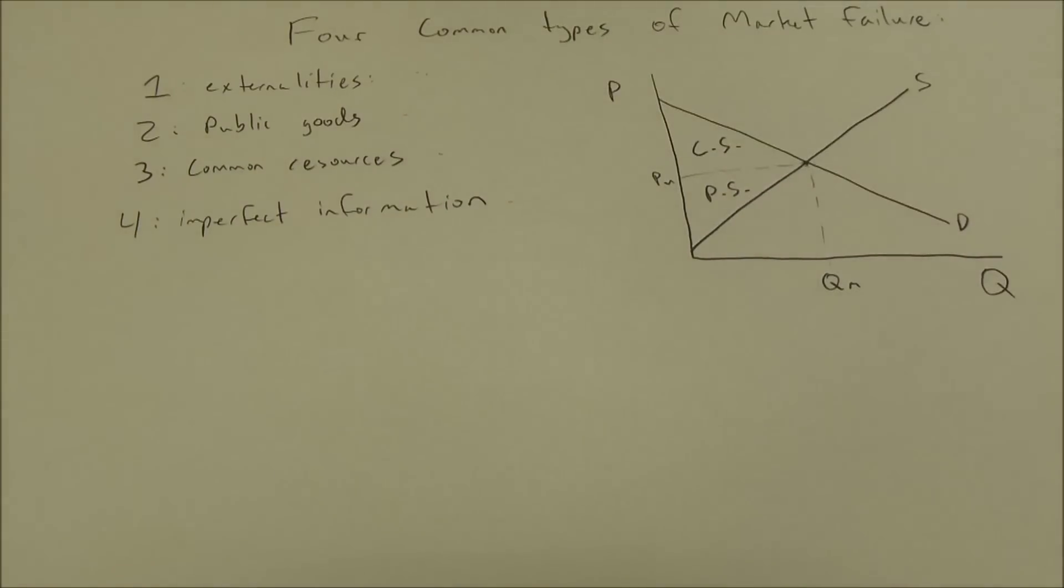So first, externalities. Externality means that there's a third party who's affected by a transaction that isn't involved in the transaction. So let's suppose that there's a factory that pollutes. When they pollute they cause harm to somebody else. That person isn't involved in the transaction.